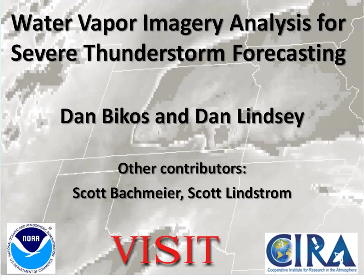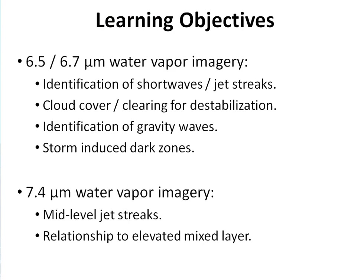The goal of the session is to learn about the utility of the water vapor imagery in the severe weather forecast and how it blends with other available data sets. Our learning objectives apply whether you're using 6.5 microns on GOES East or 6.7 microns on GOES West, using the water vapor imagery to identify short waves and jet streaks, look at cloud cover and clearing for destabilization, identify gravity waves, and also look at storm-induced dark zones.